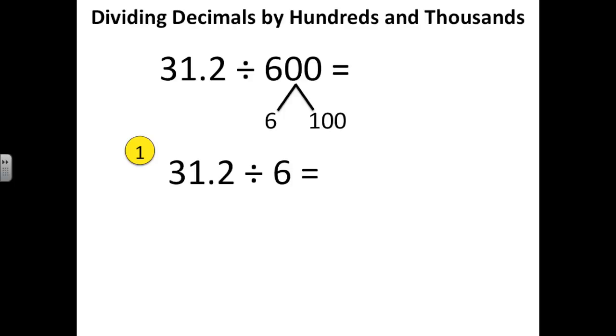So 31 and 2 tenths divided by 6 equals, if I'm solving it mentally, I'm going to ask myself how many times can 6 go into 31, which is 5 times, and then I will have 12 left over. I bring down my 1 and I would have my 2 there. So 6 goes into 12 two times. Now I need to add in my decimal place. Since there's one decimal in the number 31 and 2 tenths, I'm going to put it after the 5 and before the 2 so that I have one decimal place in my answer.